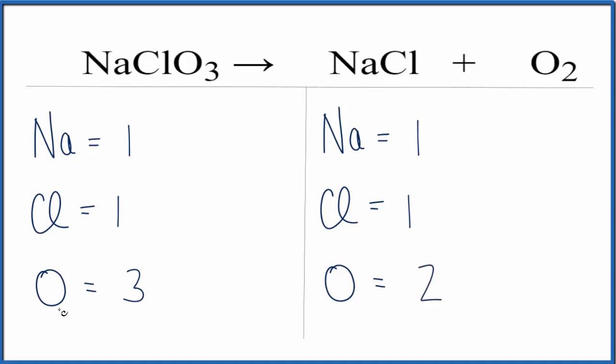Probably the easiest thing is to try to get this oxygen here to an even number and that'll let us balance that out on the other side. So if we want to get this to an even number, we can multiply this by two.